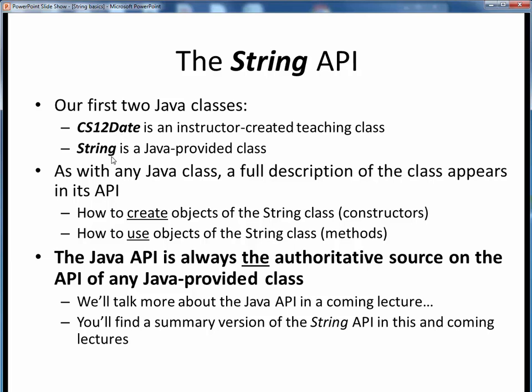is an official part of the Java programming language. Regardless of the origin of any Java class, a full description of it is given in its API. In particular, for the String class, its API tells how to create objects of that class type using its constructors and how to manipulate string objects using its available methods.